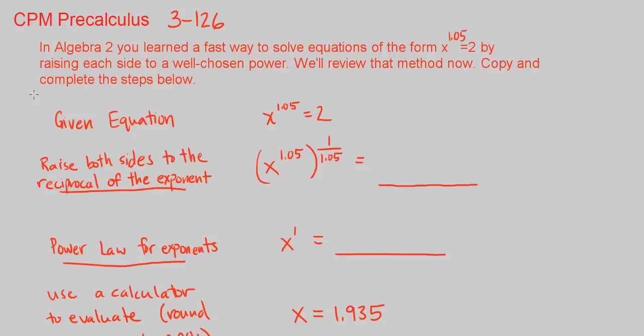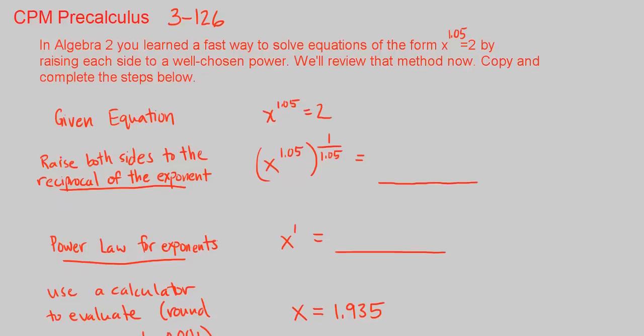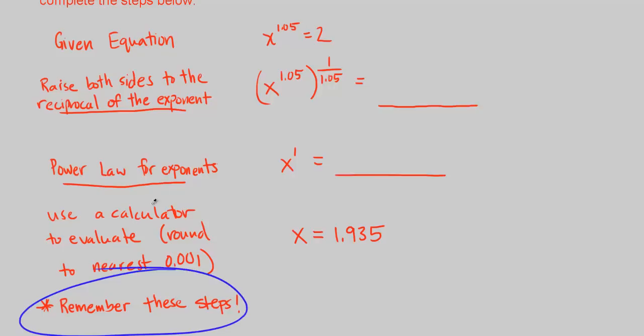Well basically, these are the steps to do it. So let's copy this and make sure this is in your notes and remember these steps. We start off with the given equation. So the given equation is x to the power of 1.05 is equal to 2.